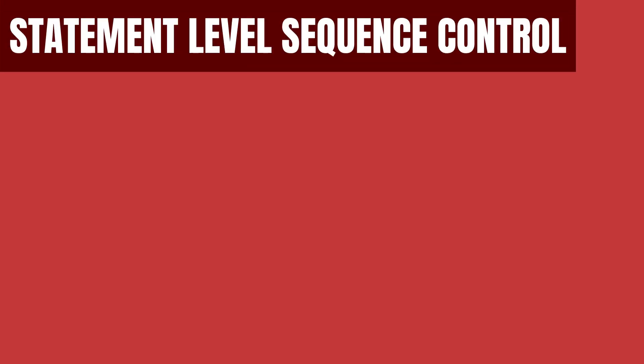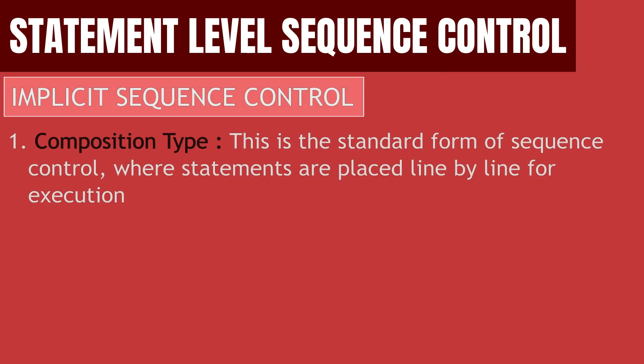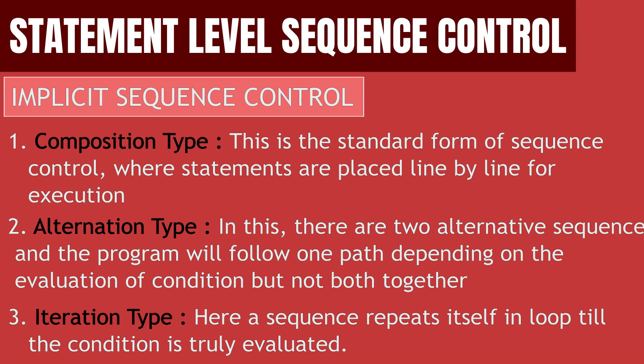Next, we have statement level sequence control. In this, first we have implicit sequence control, which is divided into three types. First, composition type — the program follows a sequential manner, reading the code line by line, just like a very basic code. Second comes the alternative type, which is very similar to your if-else statement, where the program sequence will follow either part depending on the condition's evaluation. And lastly, the repeating sequence, also known as loops, which continues till the condition is valid.